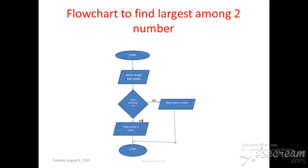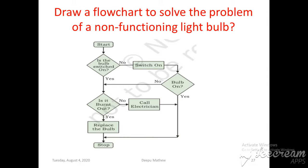The next example is drawing a flowchart to solve the problem of a non-functioning light bulb, taken from the textbook. The goal is to find whether a bulb is functioning correctly or not. We start, then the first decision box checks whether the switch is on or not.